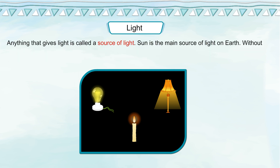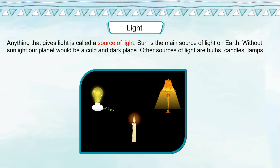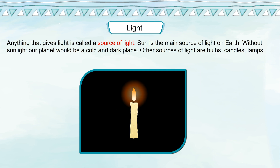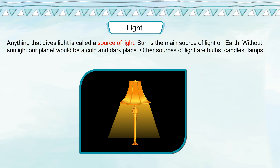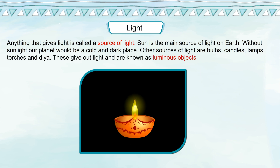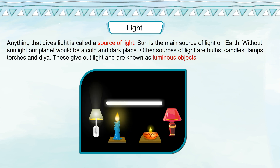Anything that gives light is called a source of light. Sun is the main source of light on Earth. Without sunlight, our planet would be a cold and dark place. Other sources of light are bulbs, candles, lamps, torches and diyas. These give out light and are known as luminous objects.